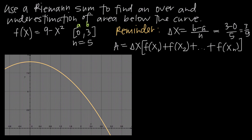Now we want to mark those subintervals off on our graph. The interval we're interested in goes from x equals 0 to x equals 3. We need to divide this general interval into 5 subintervals, each of width 3 fifths. Before drawing them on the graph, let's figure out the division points of the subintervals.